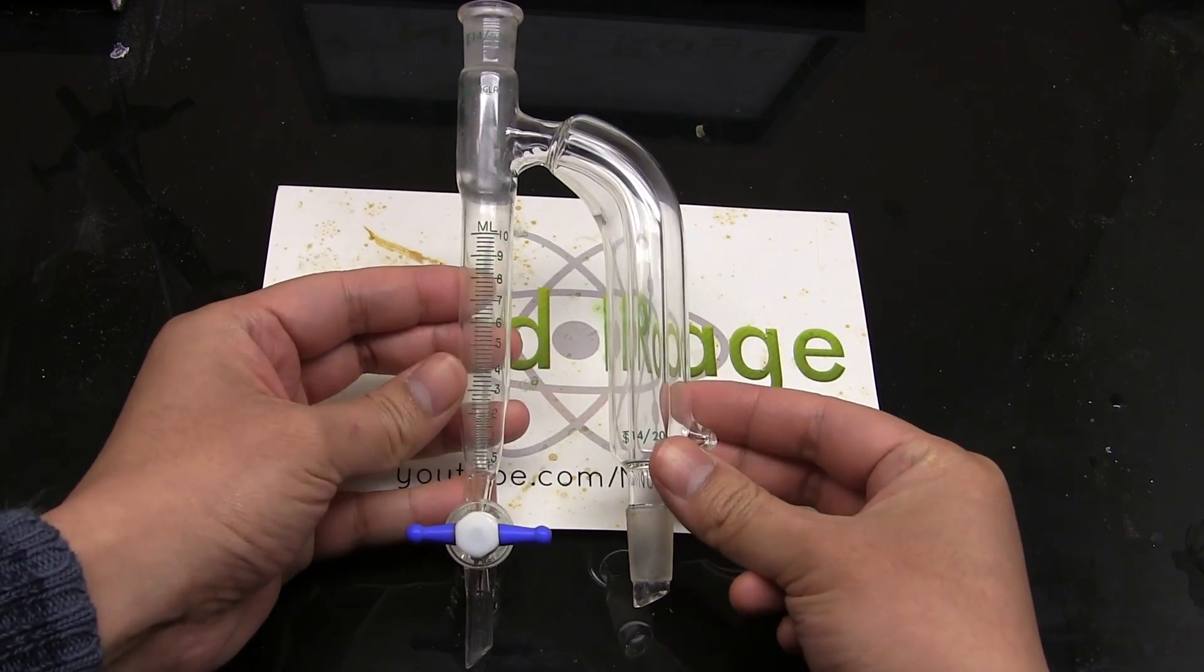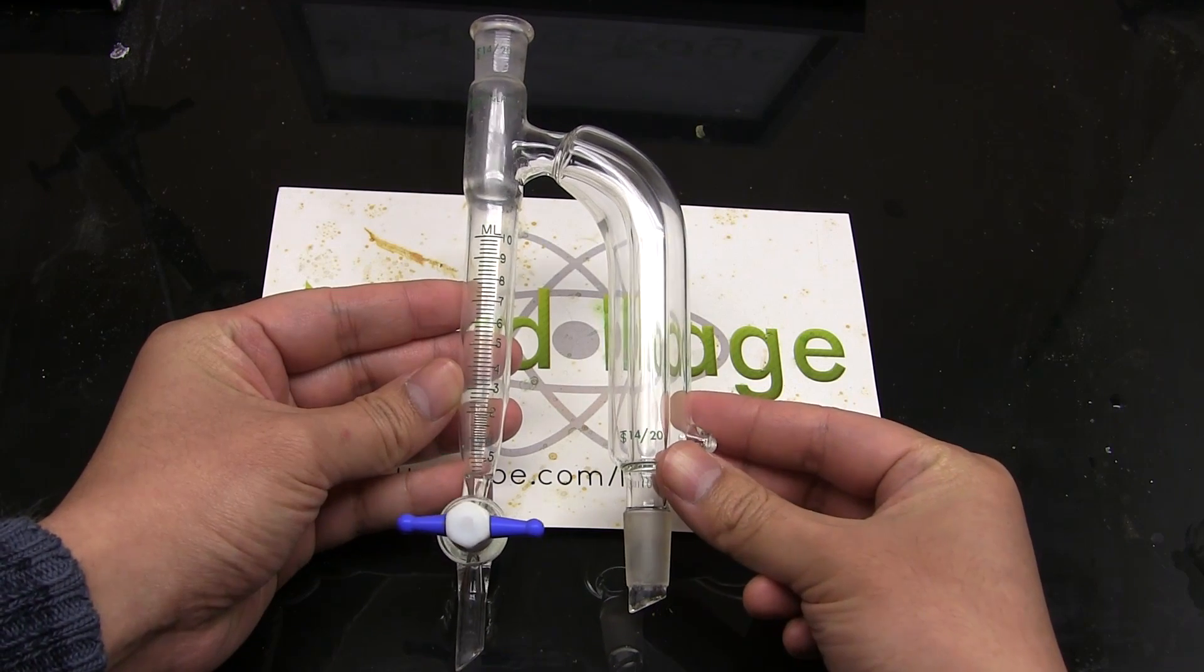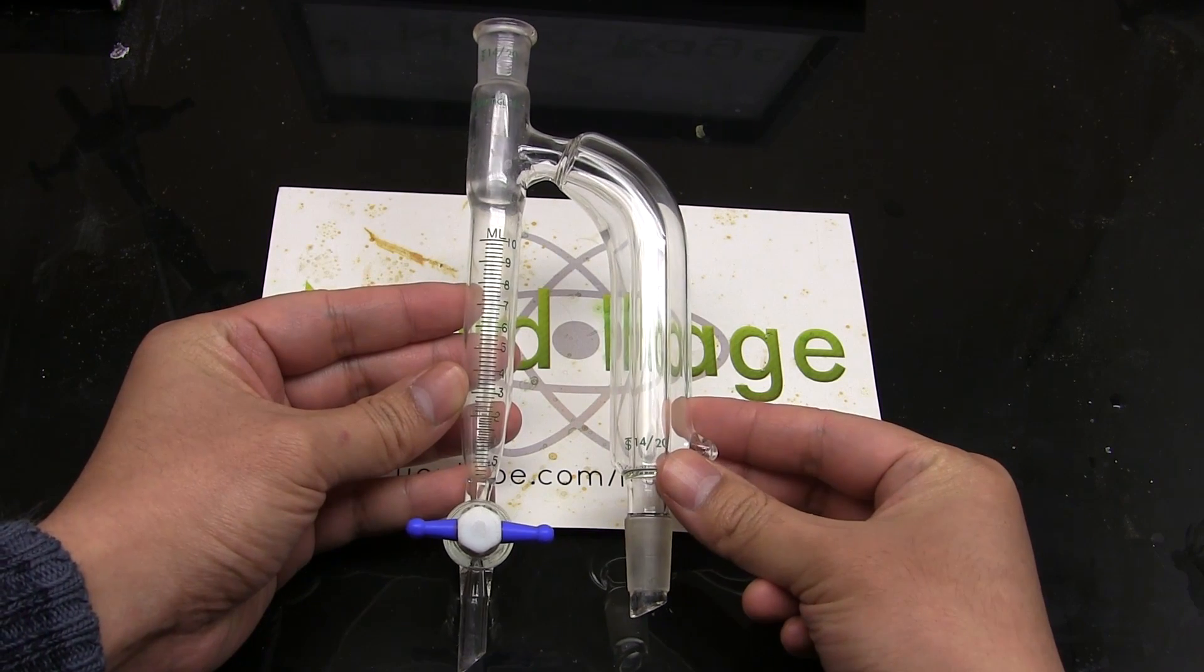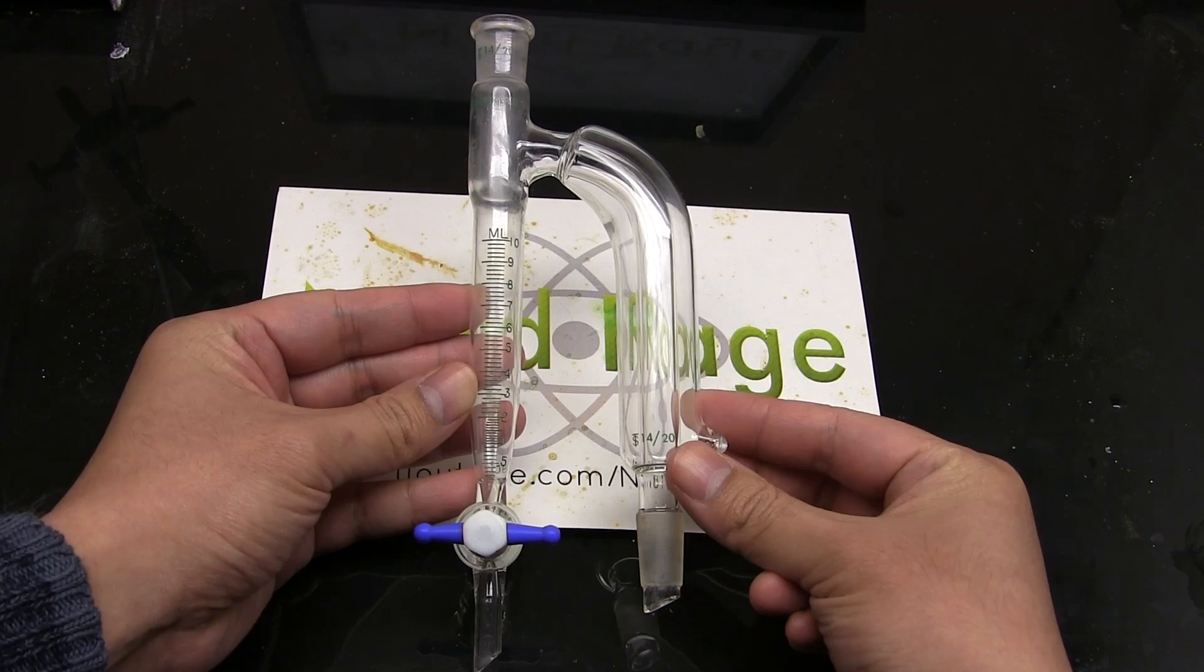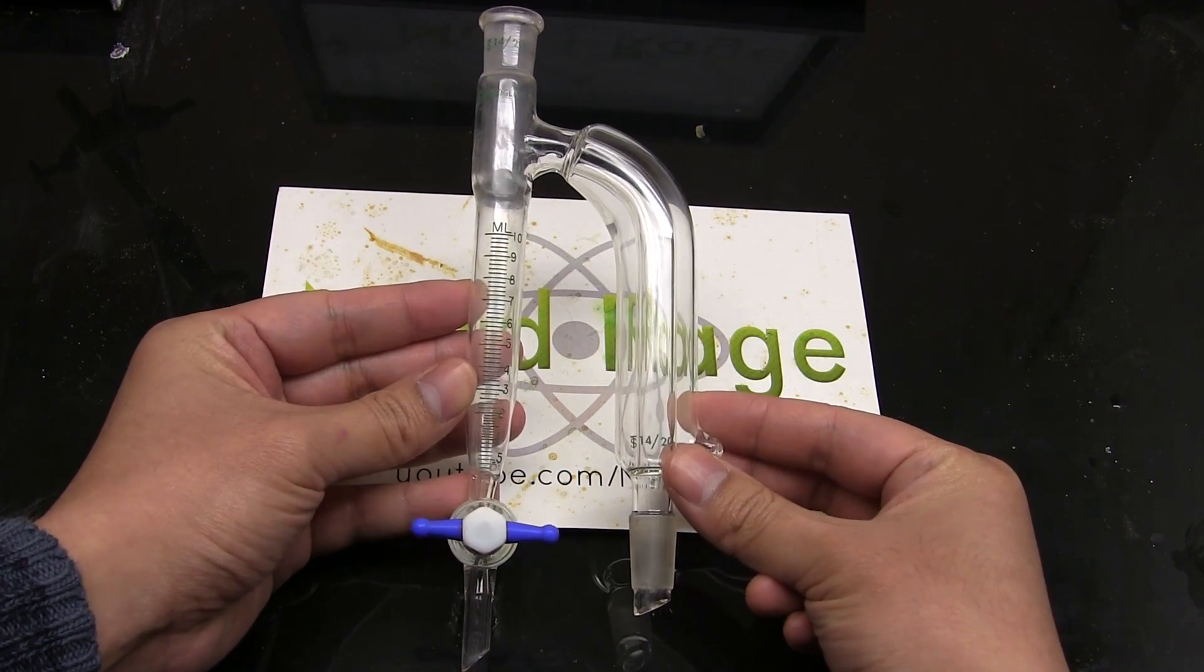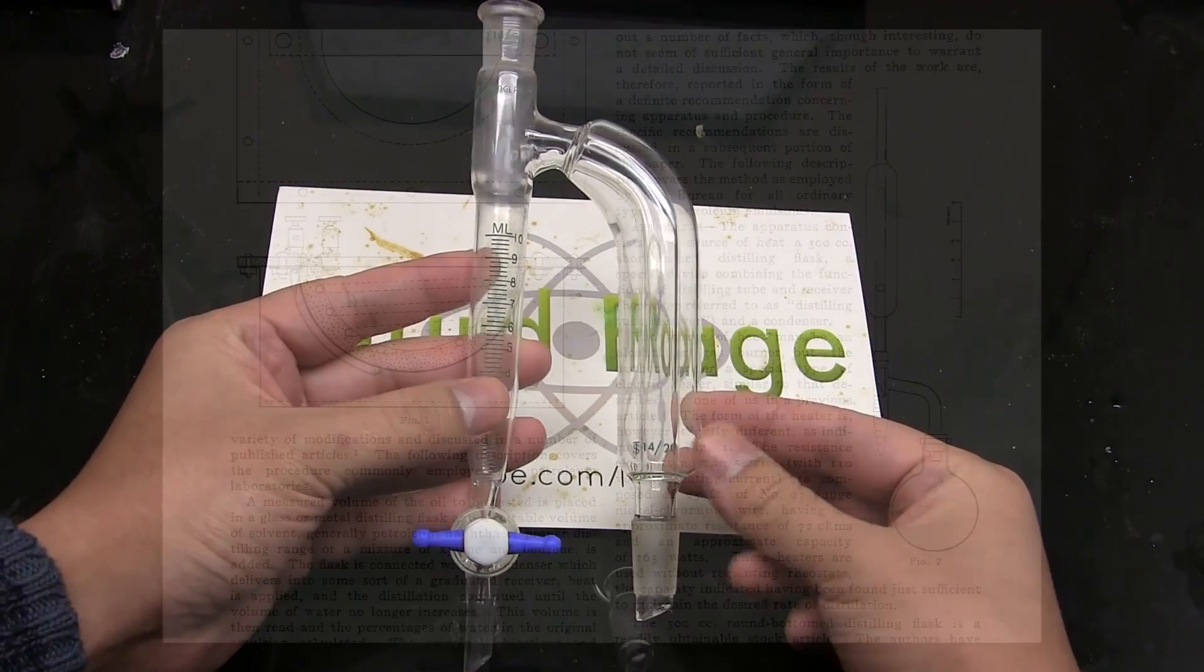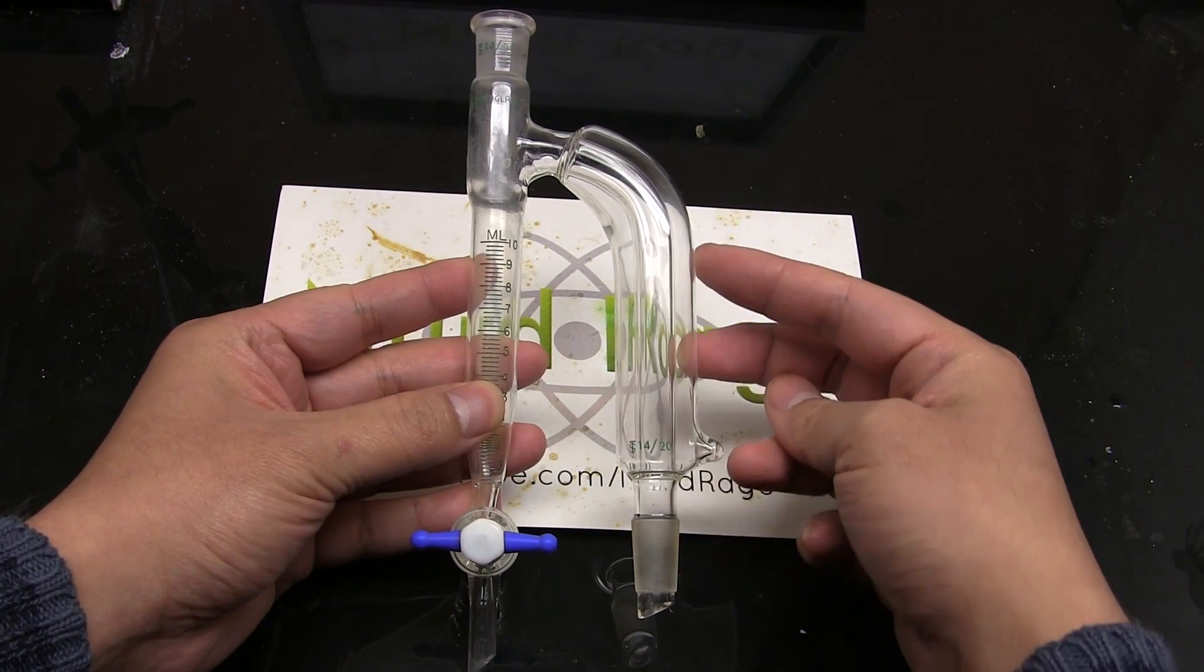Other devices under different names that essentially do the same thing include the Dean-Stark receiver, the Barrett trap and the Clevenger trap. What I have in my hand here is technically a Barrett trap because it has a stopcock for draining the water out as it accumulates. The original Dean-Stark trap has just a blind tube for measuring the water accumulated. But the name Dean-Stark trap has become so commonplace with these devices that I'm going to call it a Dean-Stark trap as well for this video.